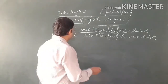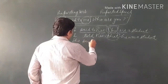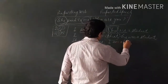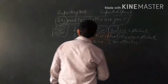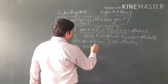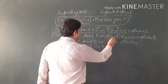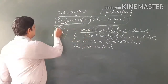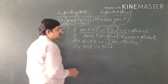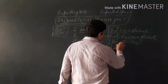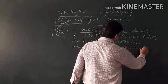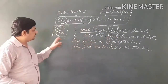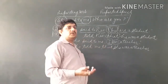Let me give you an example: 'She said to me, I am a teacher.' In indirect speech, the word 'I' is first person, so first person changes according to the subject. The subject here is 'she', so 'I' changes to 'she'. You would write: 'She told me that she was a teacher.' So first person goes according to subject, second person goes according to object, and third person does not change.